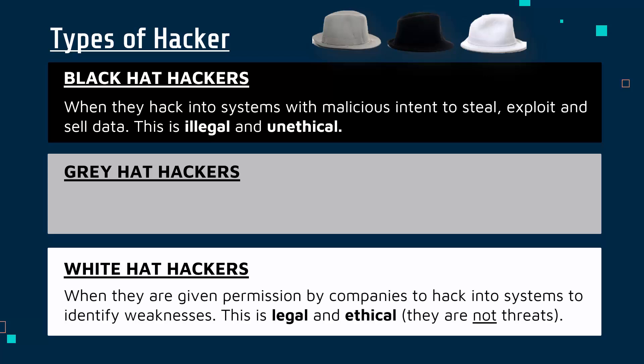On the other end of the scale, we have a hacker which is not malicious. A white hat hacker is where the person has been given permission to hack into the system. Companies do this to identify weaknesses — it might be hard to just look at your own systems and figure out the weakness. It's better to give somebody else a chance to try and break in. If they can break in, you can react and fix that weakness. It's a fairly common practice nowadays — we'll look at it more regarding penetration testing in the future. This is legal and also ethical.